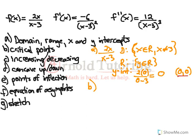Critical points are found where f prime of x equals 0. So let's set negative 6 over x minus 3 squared to equal 0. We can see that this can never happen, because the only way a fraction is 0 is if the top is 0. Since it's negative 6 on top, that's never going to be 0, so there are no critical points.